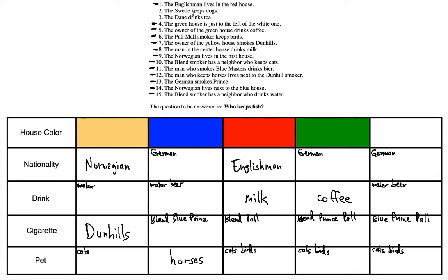The Dane drinks tea — so Dane and tea are candidates, excluding the Norwegian and Englishman columns, and excluding column 4 which already has coffee. So Dane and tea can go in columns 2 or 5. The Swede keeps dogs — Swede and dogs can go in columns 2, 4, or 5, not column 1 (Norwegian) or column 3 (Englishman). Now we have all candidates placed and we begin elimination.